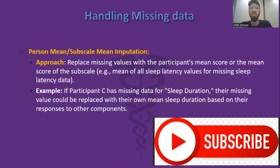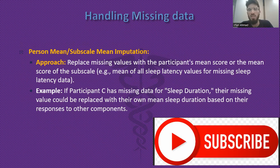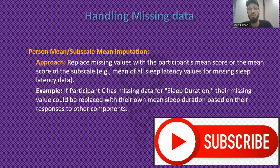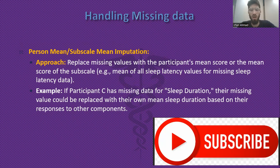The second method is person mean or subscale mean imputation. Here, the missing value is replaced with the mean score for that subscale across the sample. For example, for missing sleep latency data, take the mean of all available sleep latency values. Alternatively, if sleep duration is missing for a participant, it can be estimated based on the participant's own responses to other components.